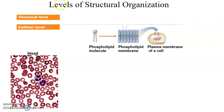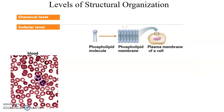The cellular level includes both the structures of the cell and individual cells themselves, including the phospholipid membrane that forms a structure around the cell giving it its outer surface, as well as the various cells you might observe under a microscope.